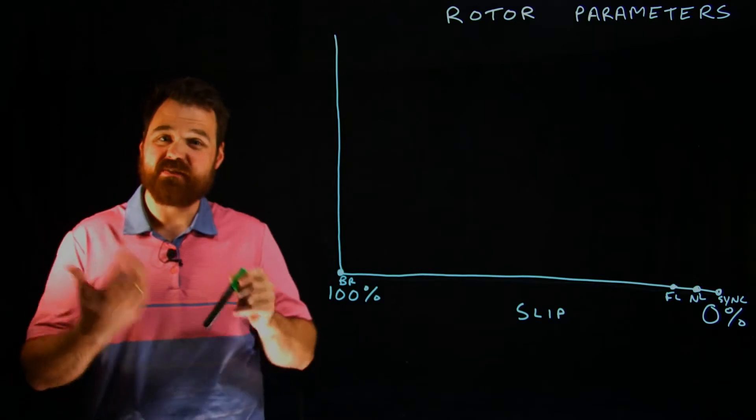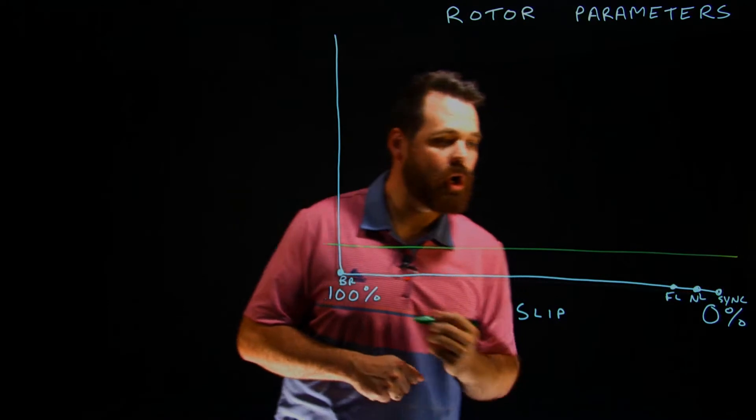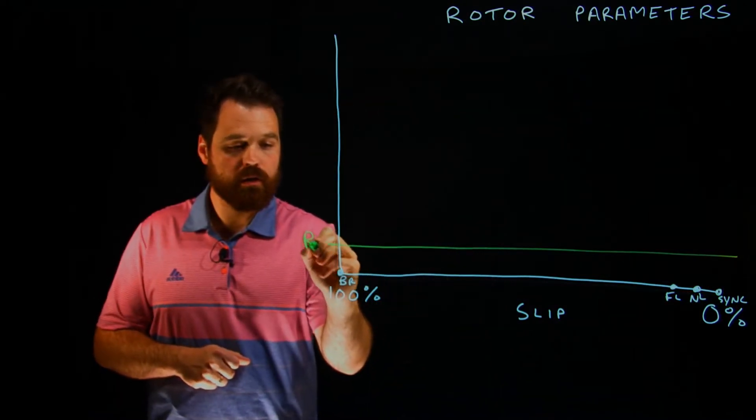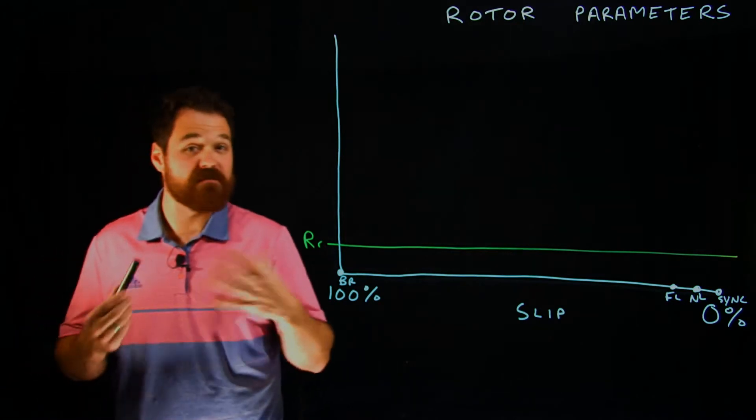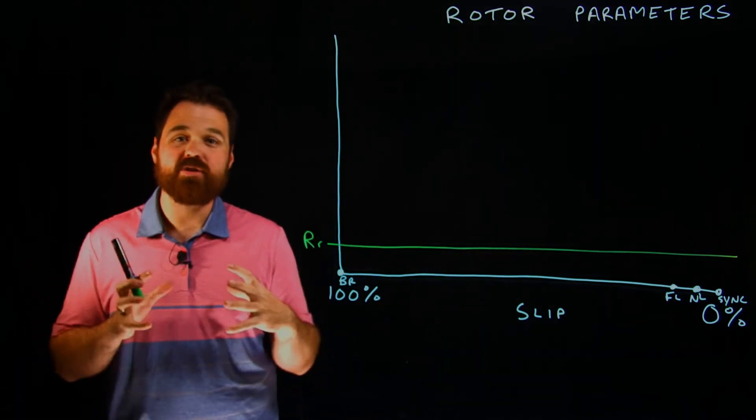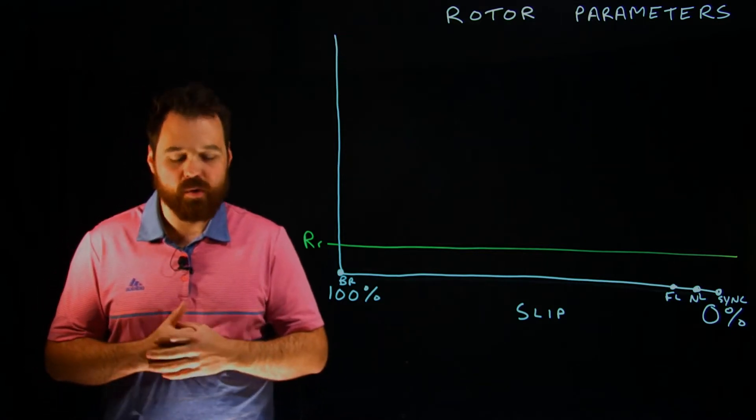So that resistance is constant, it's that physical property. We've got the end ring shorting out the end of the rotor bars, creating that low impedance path for current flow inside the rotor.